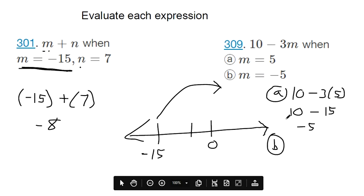So for part b, I've got to plug in negative 5 for m. If you do that, we've got to multiply first. Now there's a couple of different ways you can think of this. A positive 3 times a negative 5 makes a negative 15.